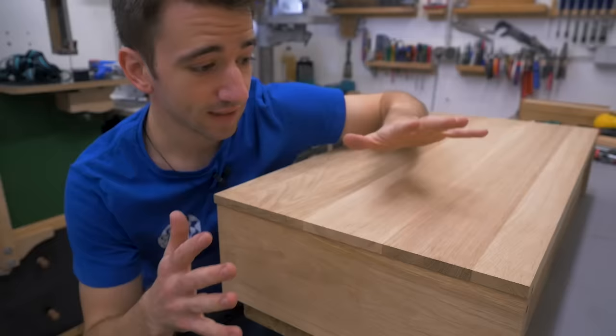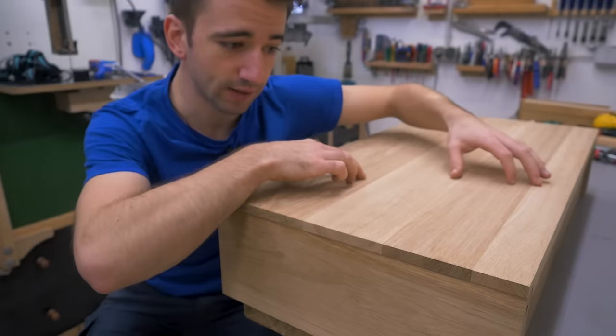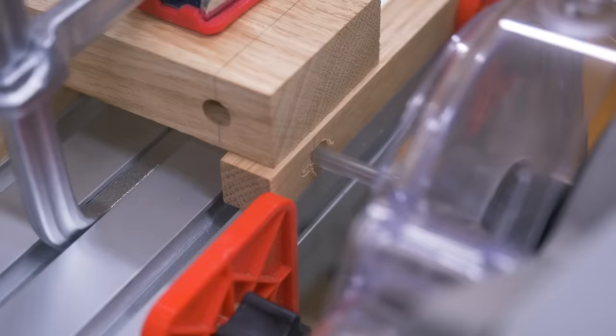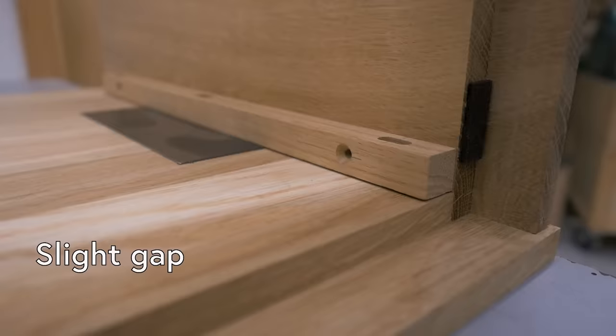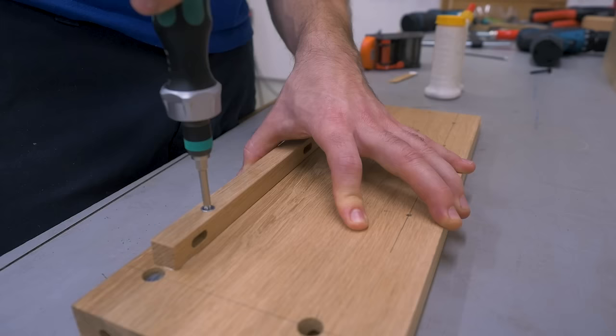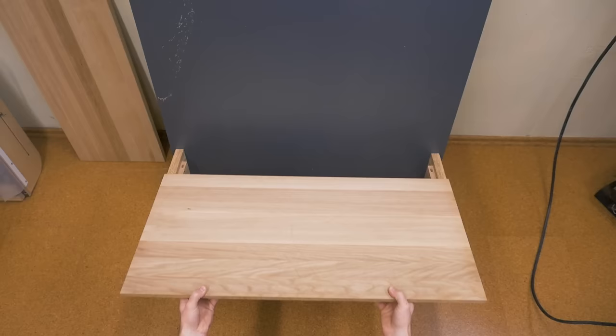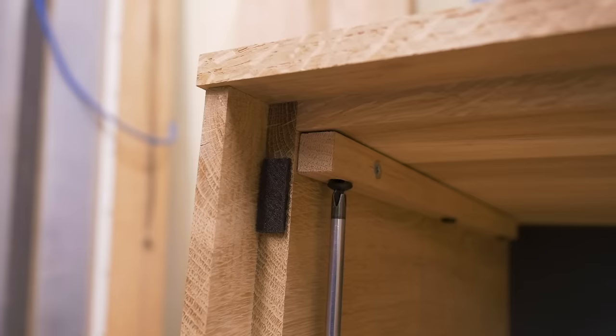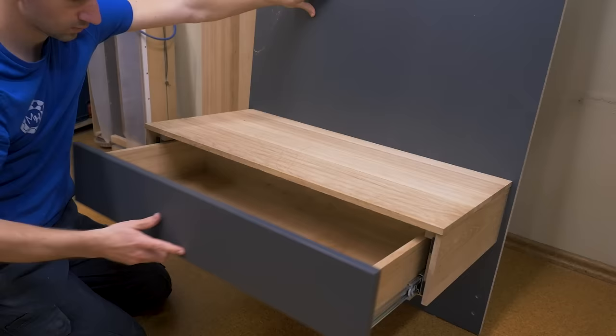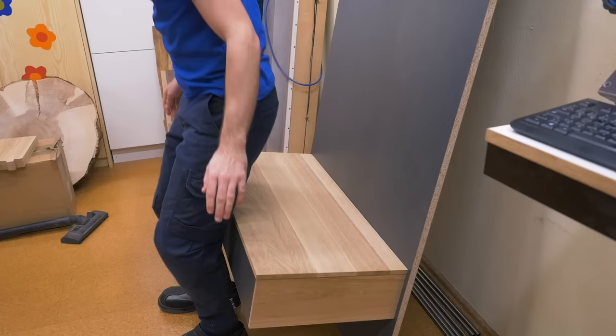Now I can not glue these because here I have grain running this way and here this way and this will expand and contract with the seasons. If I glue that, it could bend or the glue could fail. Instead I made some strips with slots for screws that allow the top to move. I glued them with a slight gap so the screws can pull the top down. Then I transferred the slot positions and put everything together. That looks really good so far. Unfortunately I can't test sitting on it right now without it being screwed to the wall.